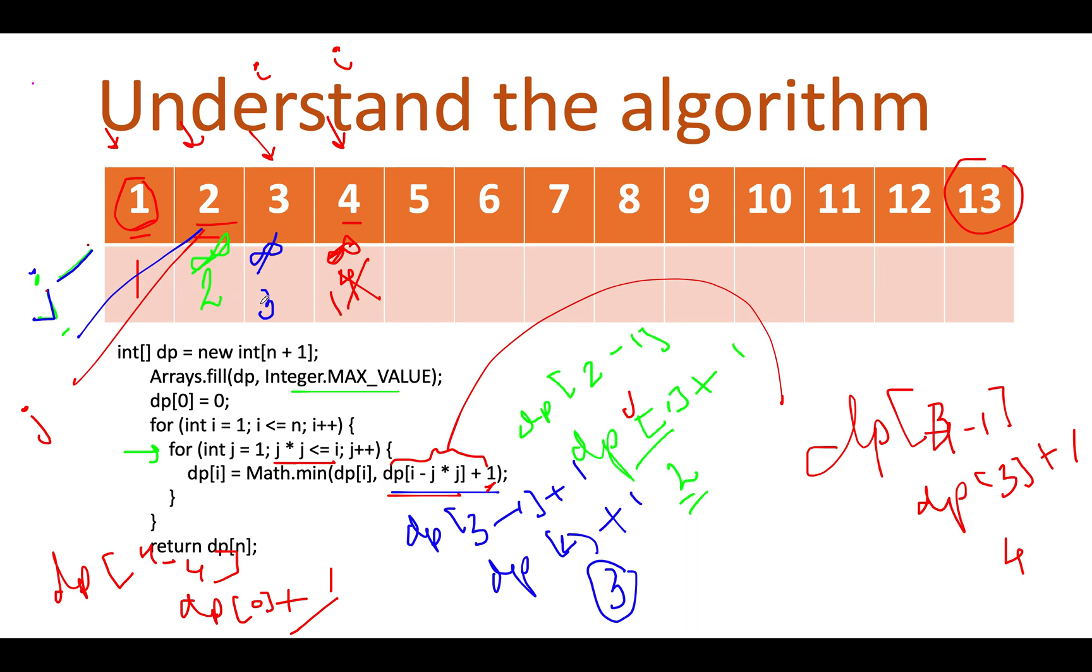So we are filled in one, two, three, one and filled in the first four values. Let's do it for a few more and then you can complete the entire table by yourself.